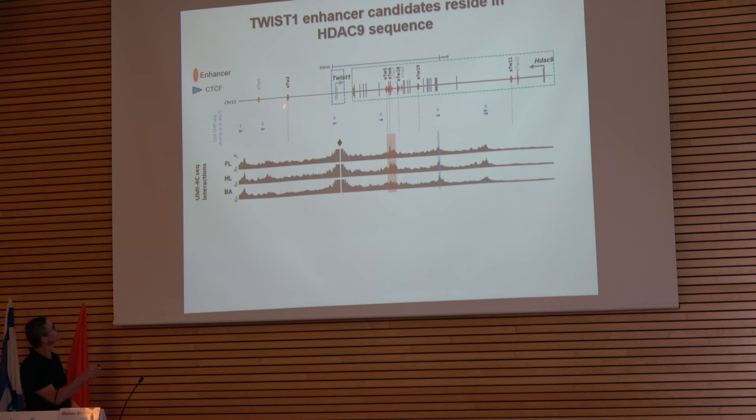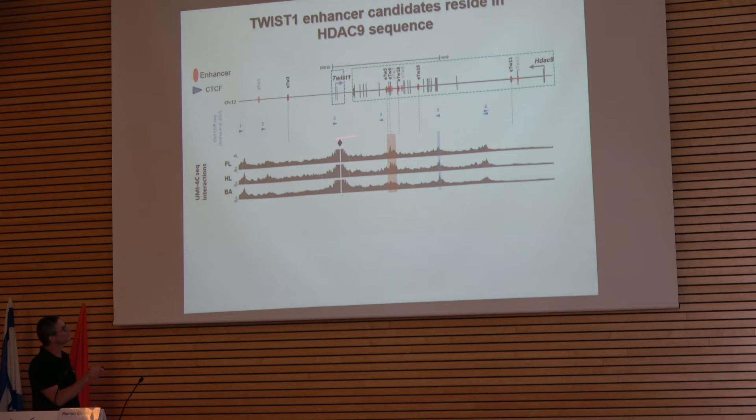We then performed 4C, looking for chromatin interactions of the TWIST1 promoter with different regions in this locus. We found that this region is interacting with the TWIST1 promoter in the limb and the branchial arch, and it overlaps with some enhancer candidates. We also found other regions that interact with the TWIST1 promoter region, which are not overlapping with enhancer candidates but contain CTCF sites.